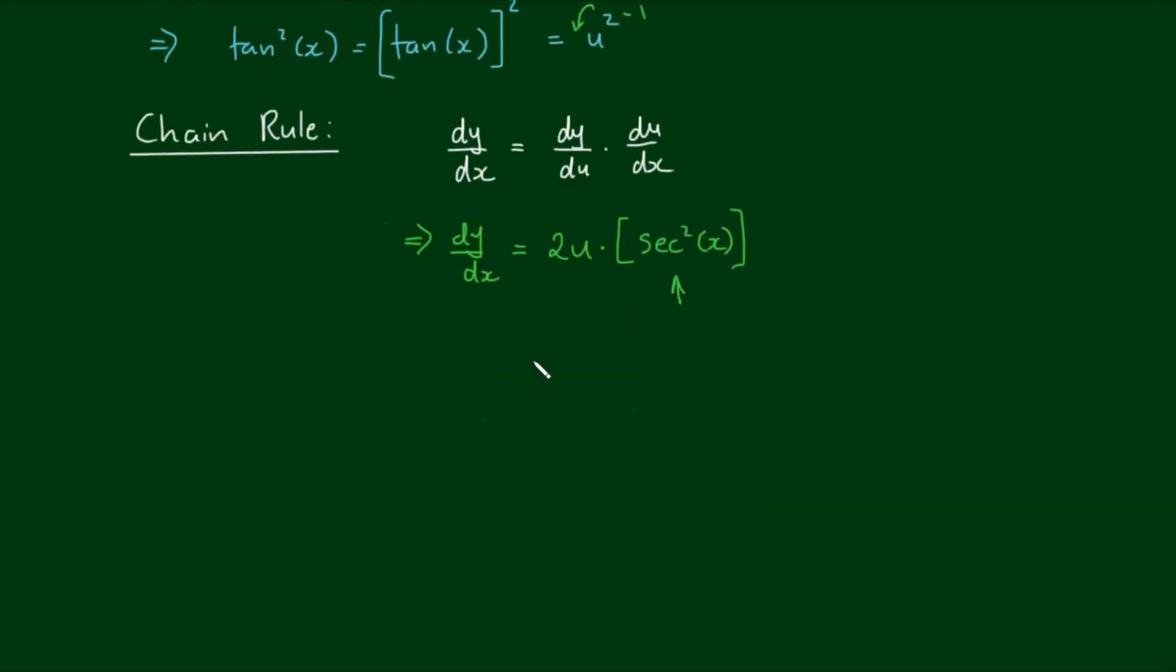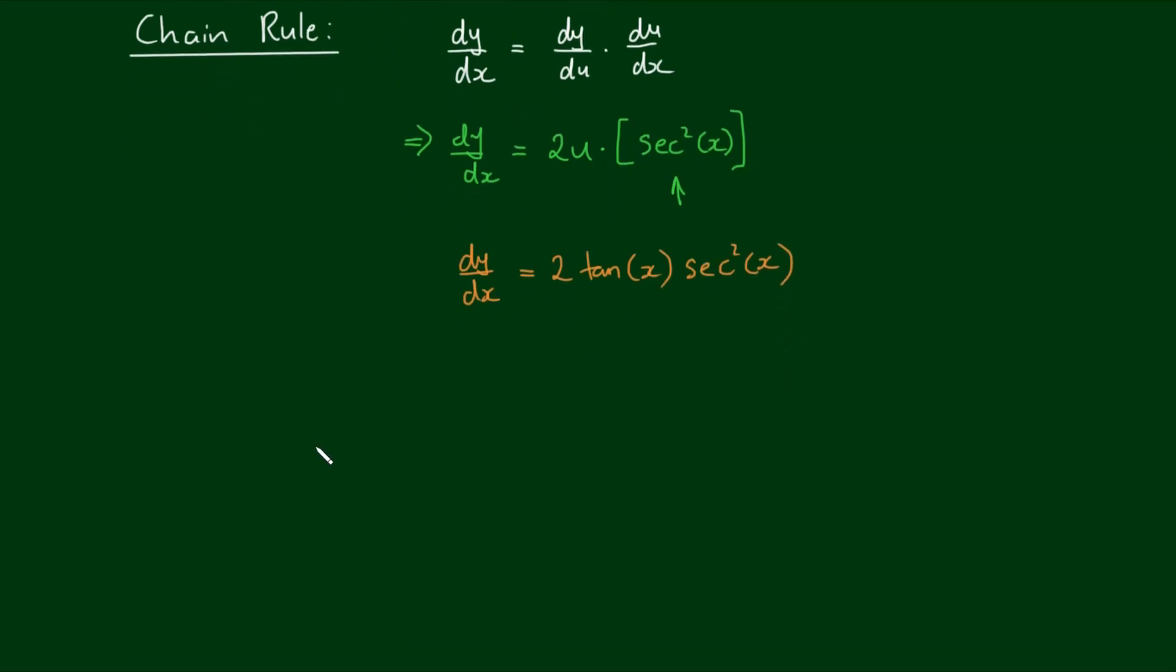So if we now make the substitutions, we have dy/dx is equal to 2 times u, which is the tangent of x, multiplied by the secant squared of x. And you'll probably see this derivative more commonly written as the derivative of tangent squared of x is equal to 2 secant squared of x multiplied by tan of x.